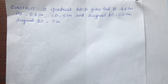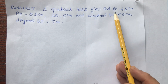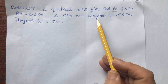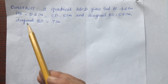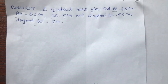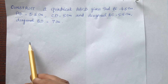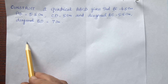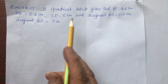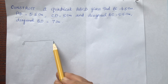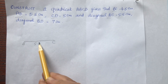As I have already told you in the last video, whenever you have to draw a quadrilateral, draw a rough sketch of it first. We have to see how many things are given: three sides and two diagonals. Out of these we will take one diagonal first. For the rough sketch we will take AC, which is equal to 5.5 centimeters.